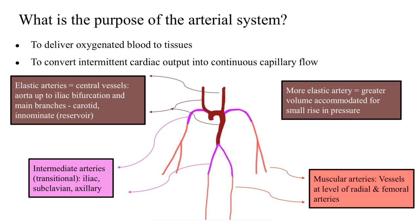These arteries are highly compliant. The second level of arteries are the intermediate arteries, also known as the transitional arteries, which consist of the iliacs, the subclavians, and the axillary arteries. The third level are the muscular arteries, which have more muscular tissue in their wall as against elastic tissue, with examples being the radial artery and the femorals.